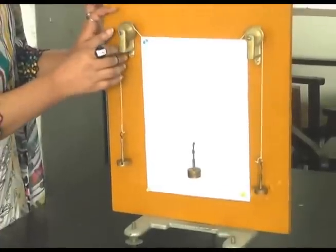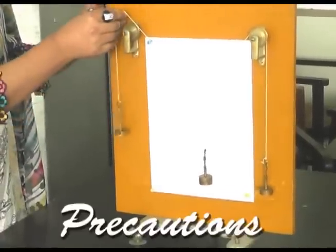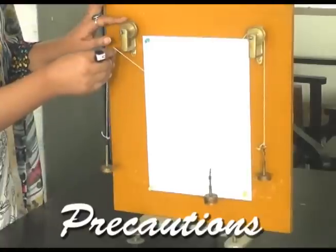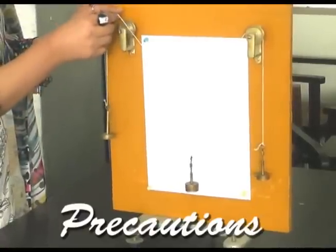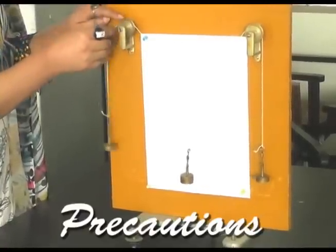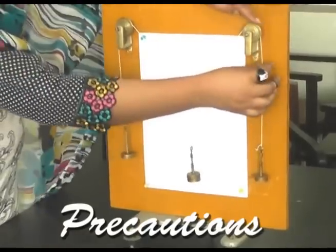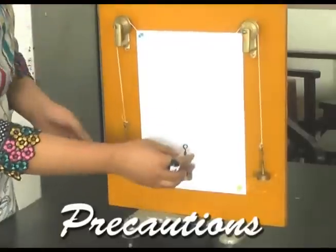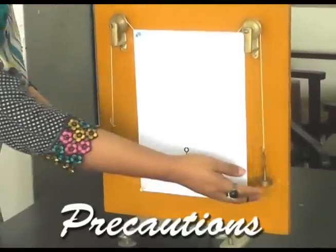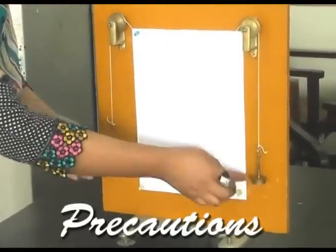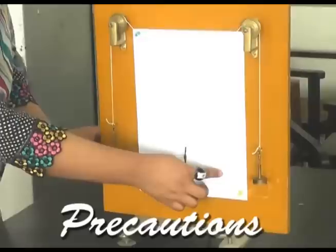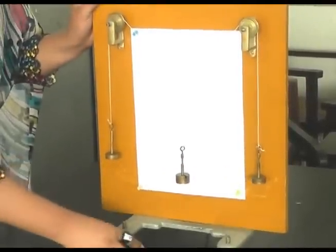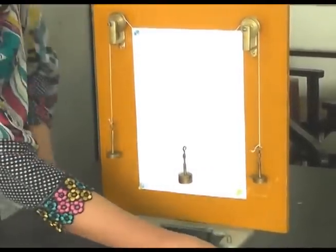Now the precautions about the performance. The pulleys must be frictionless so that thread can easily move on the pulleys. You will have to check the pulleys before starting the performance. Next one is the weight should not touch the board. For this adjustment you can adjust the board by adjusting these two screws.